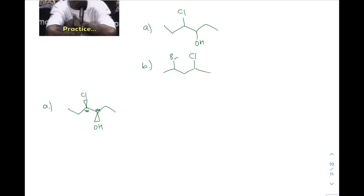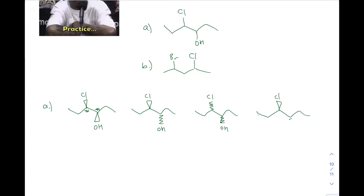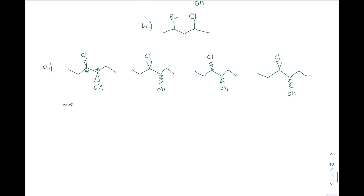We want to draw all possible stereoisomers. With two stereogenic centers, we potentially have four stereoisomers. What I like to do is start by drawing two wedges, then swap one wedge for a dash, then swap the other wedge for a dash giving two dashes, and then swap one of the others — that gives us all possible combinations. That's one way of drawing all the stereoisomers.